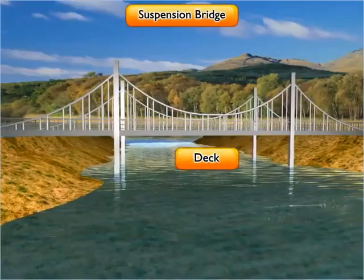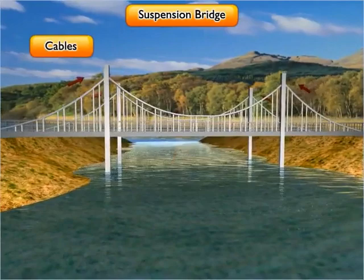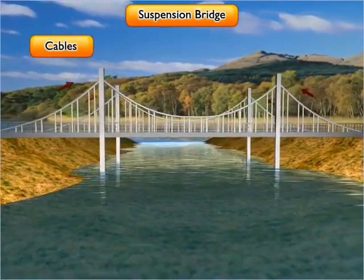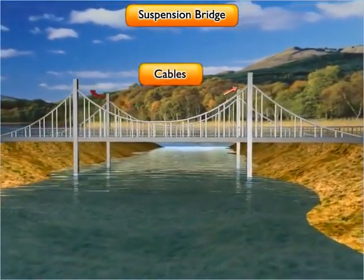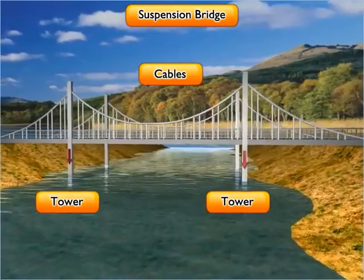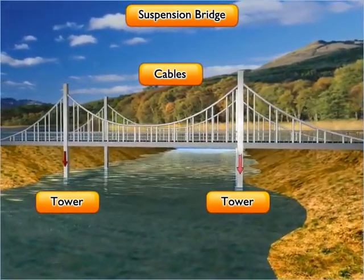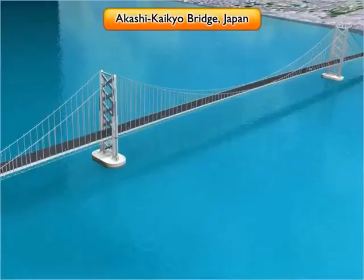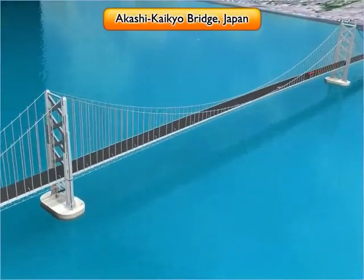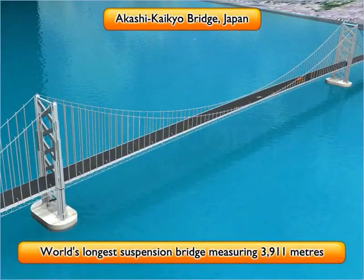The deck of a suspension bridge is hung by cables which are suspended from towers. The cables transfer the weight to the towers, which transfer the weight to the ground. The Akashi Kaikyō Bridge, or the Pearl Bridge, located in Japan, is the world's longest suspension bridge, measuring 3,911 meters.